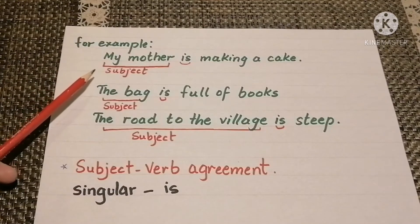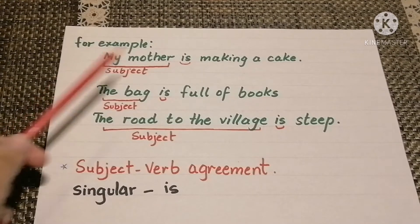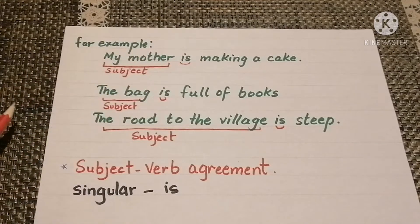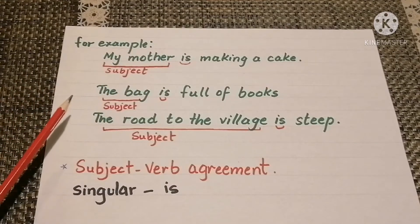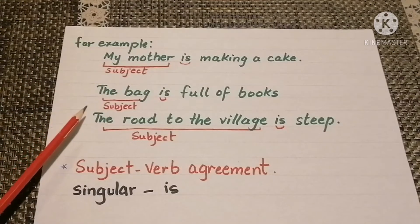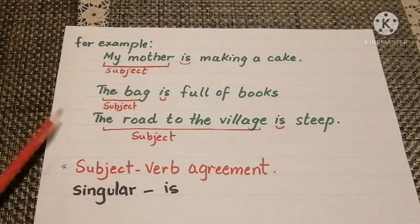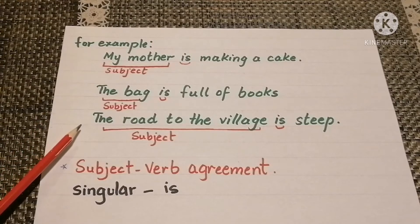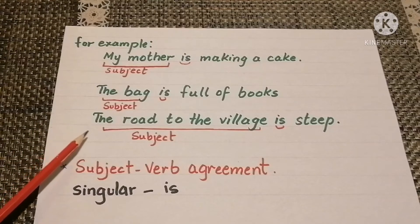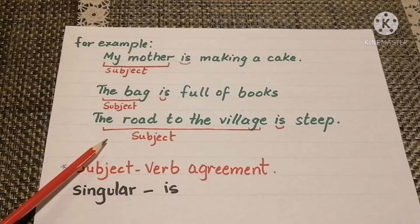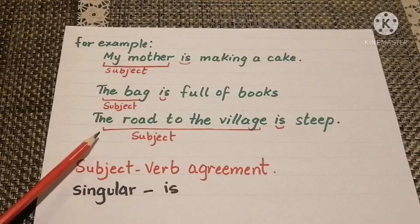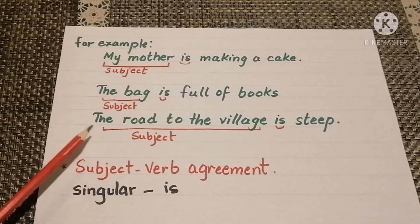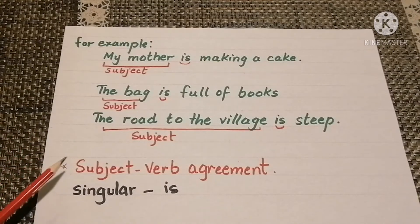Here, 'my mother' is the subject of the sentence and it is singular, so we use 'is' as a helping verb. The bag is full of books — here the subject is also singular, so we use 'is' as a helping verb. The road to the village is steep — here the subject is singular: 'road to the village.'